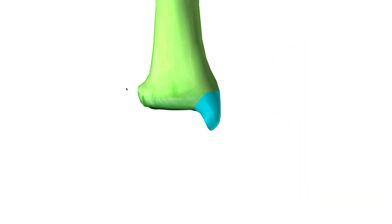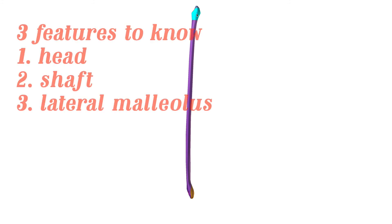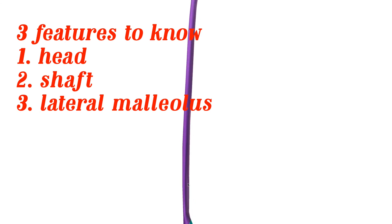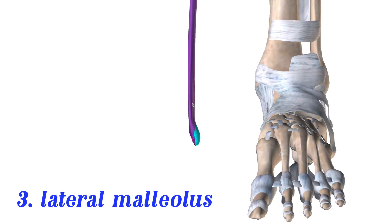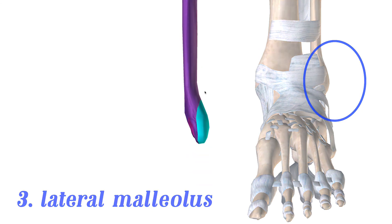Let's take some time to look at the fibula. There's not a lot on the fibula to really talk about — it does not bear weight like I mentioned before — but the three features I want you to know are: the head of the fibula, the shaft, and then your lateral bump on the ankle, which is called the lateral malleolus. That's the famous lateral bump on your ankle that keeps your socks up. Thanks for watching. I hope this helped, and good luck in your studies.